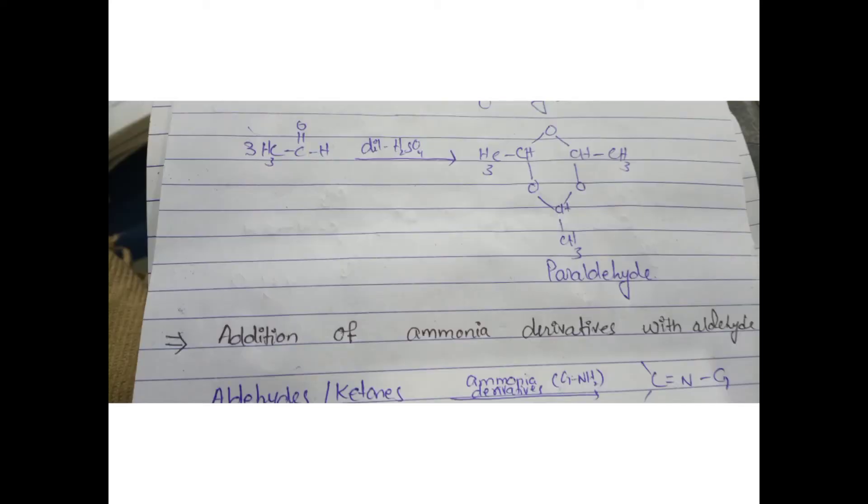Next, if we take acetaldehyde, acetaldehyde molecules with dilute sulfuric acid will form a six-membered ring, but it will be substituted. This six-membered ring is called paraldehyde. The six-membered ring has a methyl substitute attached.